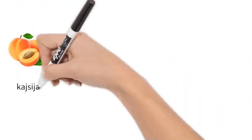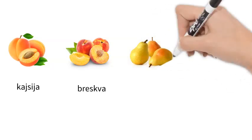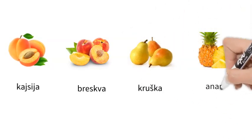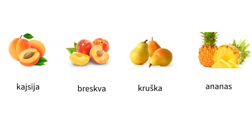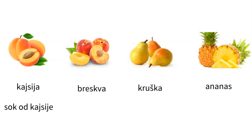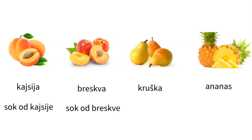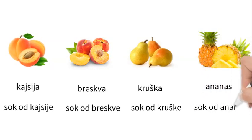It is also important to remember the names for kajsija, apricot; breskva, peach; kruška, pear; ananas, pineapple. You can find juice from all these types of fruit, so you need to say sok od kajsije, sok od breskve, sok od kruške, sok od ananasa, and so on. It is very important to know your fruits not only when ordering juice.